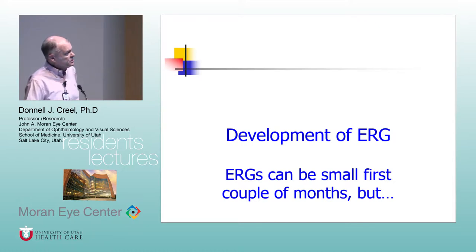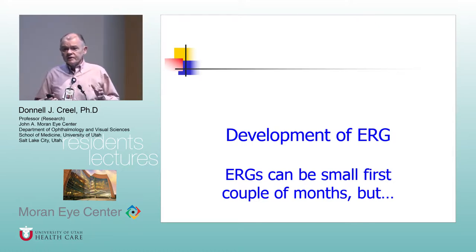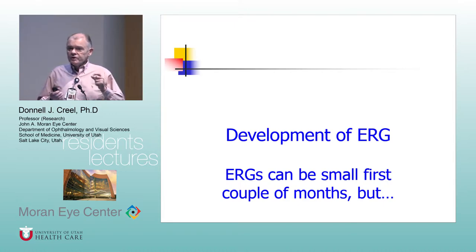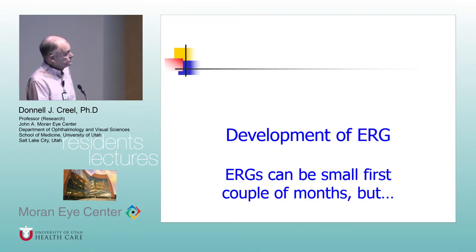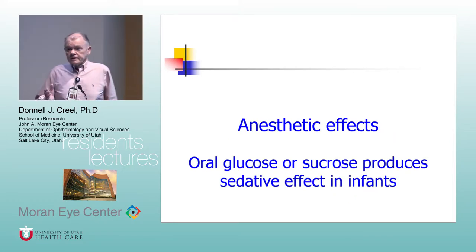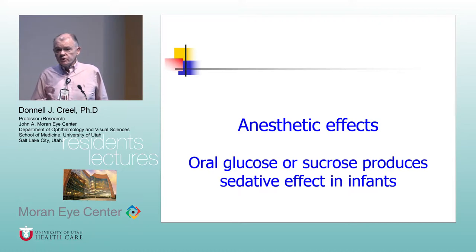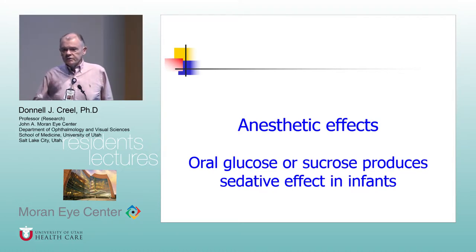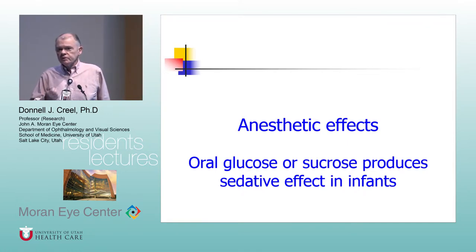A full-term infant usually has an ERG that just looks like ours — they can be a little bit reduced in amplitude, but you don't routinely see it. Regarding anesthetic effects: whenever we do exams under anesthesia, it's important you work with the anesthesiologist so that you have a very light level. Anesthesia depth can reduce the amplitude of B waves as much as 50%, although A waves are pretty much immune, and peak latencies — implicit times — are pretty much immune.